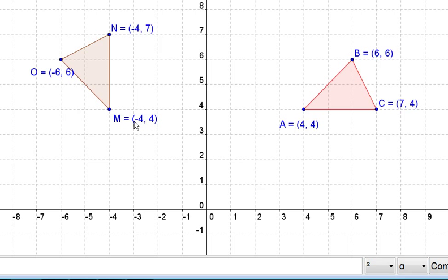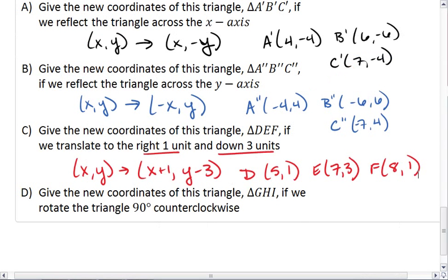So looking at this, we realize that A corresponds with M, meaning we have the new point, negative 4, 4.